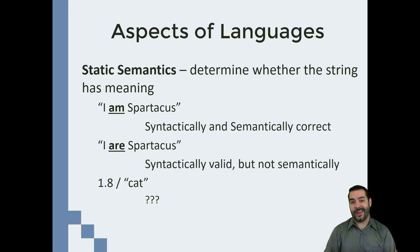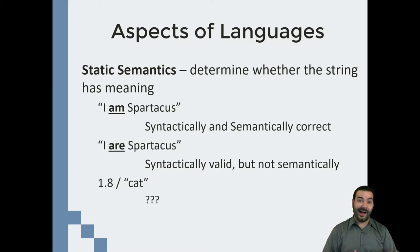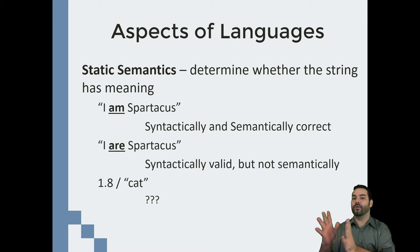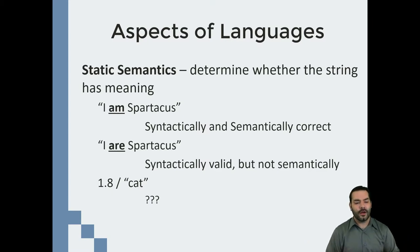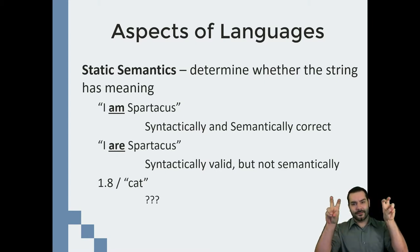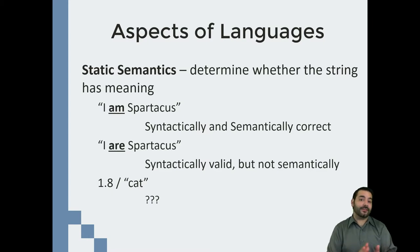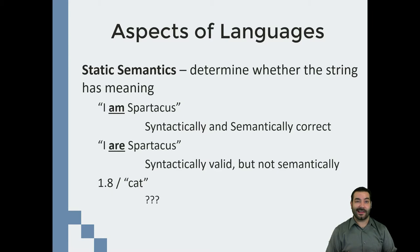I string together words: 'I am Spartacus' is syntactically correct — 'I,' 'am,' and 'Spartacus' are all words in the English language — and it's semantically correct; it makes sense. 'I are Spartacus,' however, is not semantically valid, because even though all the words are syntactically correct, it isn't semantically. You wouldn't say 'I are Spartacus.' Same concept in Python: 1.8 divided by cat — that's not semantically valid. Even though the syntax is there — a number, an operator, a string — it's not semantically correct because you can't divide a cat. Cats are not numerical values.